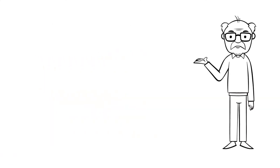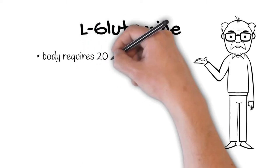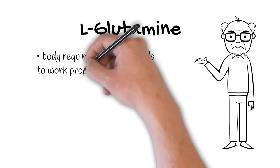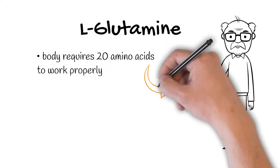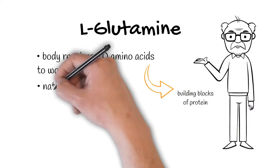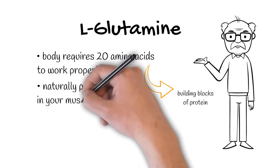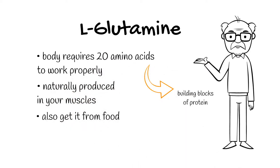Today in this video we're going to talk about L-glutamine. Now the body requires about 20 essential or non-essential amino acids to work properly as they are the building blocks of protein. Glutamine being a non-essential amino acid is naturally produced in your muscles but it can also be found in many different foods.